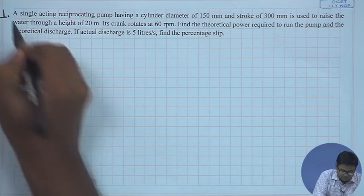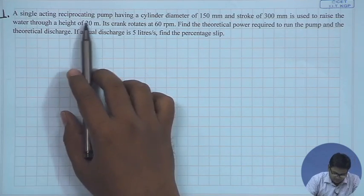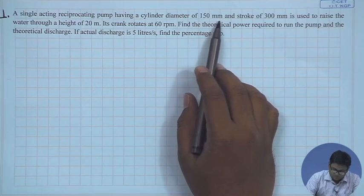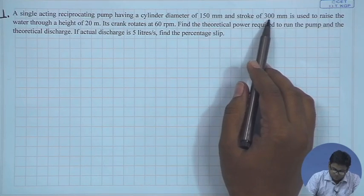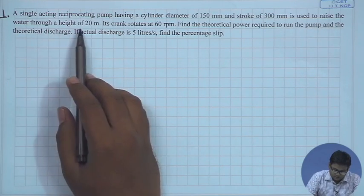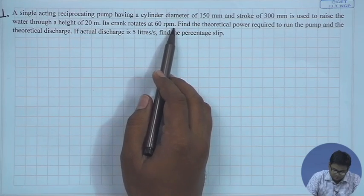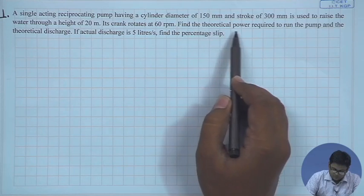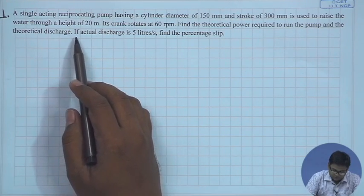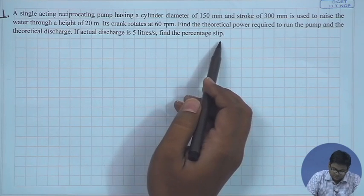The problem statement is as follows. A single-acting reciprocating pump having a cylinder diameter of 150 millimeter and stroke of 300 millimeter is used to raise water through a height of 20 meter. The crank rotates at 60 rpm. Find the theoretical power required to run the pump and the theoretical discharge. If actual discharge is 5 liters per second, find the percentage slip.